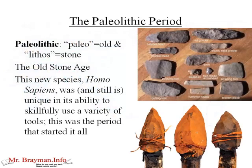As humans migrated and set up early civilizations, our name for that period is the Paleolithic. Paleo is a Greek word meaning 'old,' and lithos means 'stone' — so we're talking about the Old Stone Age. This new species, Homo sapiens, was and still is unique in its ability to skillfully use a variety of tools. Chimpanzees, seagulls, and rats seem to use basic tools, but they don't have anything as complicated as the spears shown here. The Old Stone Age is when we're using stone tools.